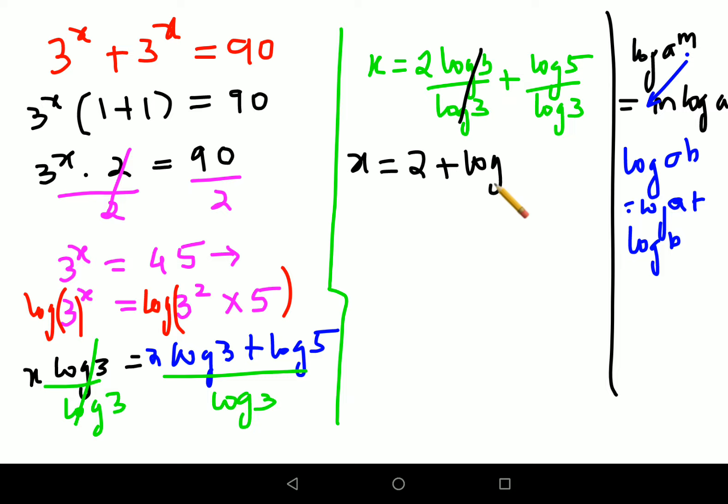We can either write it as log 5 upon log 3 or we can also write this as x equals to 2 plus log of a upon log of b can be written as log of a to the base b which is log of 5 to the base 3. These are the 2 answers.